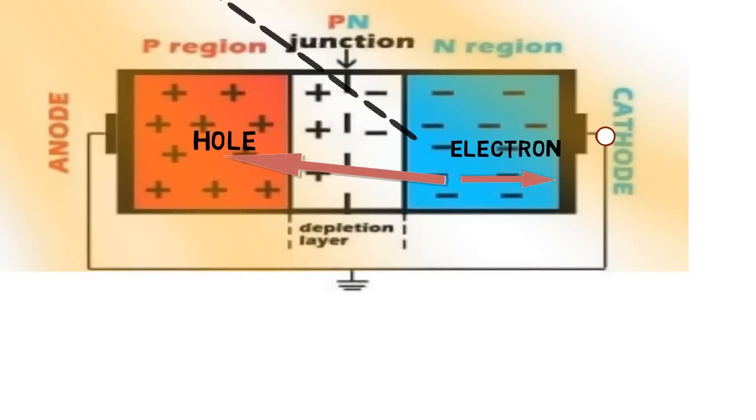Then these moving electrons are collected by a thin wire above the silicon cell and they move through an electric circuit and can power your electronic equipment if there is sufficient power output.